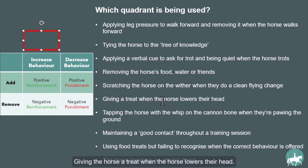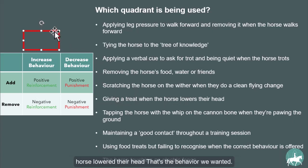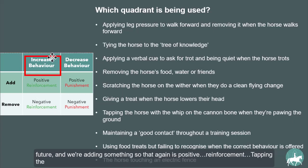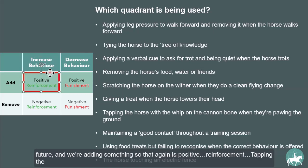Giving the horse a treat when the horse lowers their head. Again, we're adding something — a treat. The horse lowered its head, that's the behavior we wanted, and we're marking that behavior with the treat to increase it in the future. We're adding something, so that is again positive reinforcement.